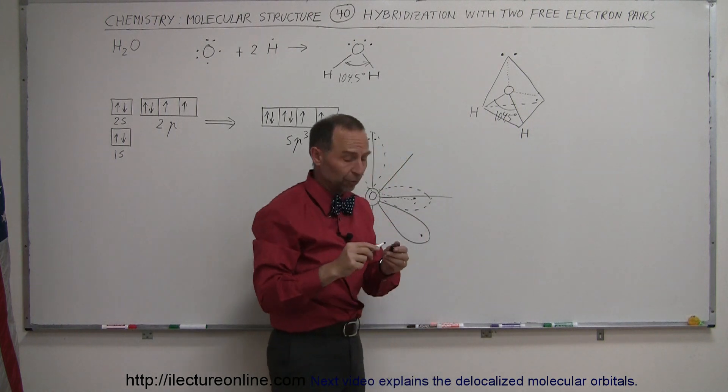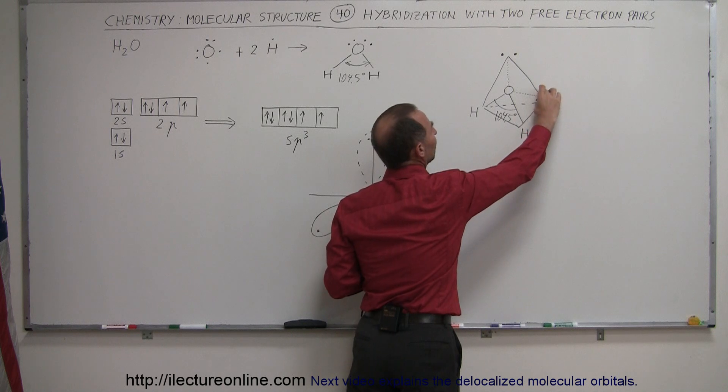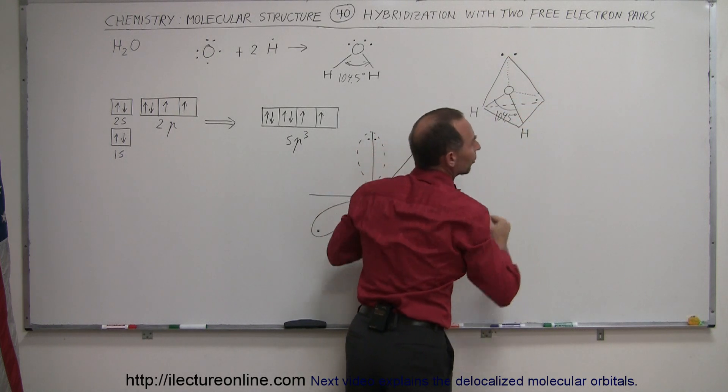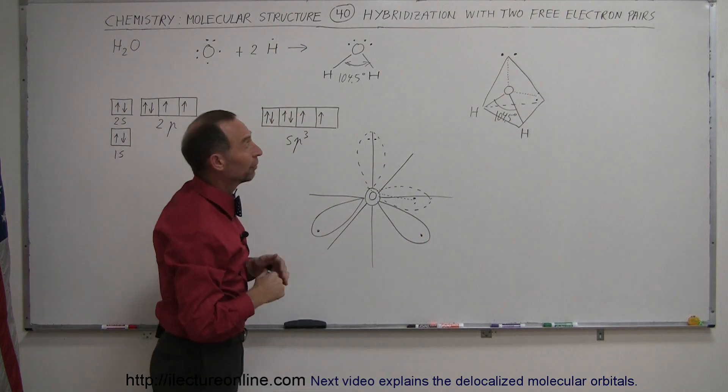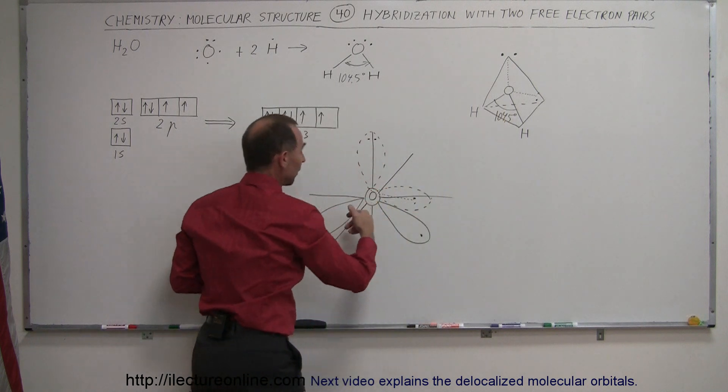Normally, tetrahedral shapes have bond angles of 109.5 degrees. But because of the extra repulsive force of these two free electrons and those two free electrons, it pushes the hydrogens a little bit closer together down to an angle of 104.5 degrees. But the orbitals still will stick out in the four directions.